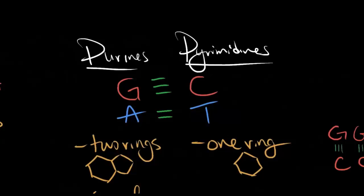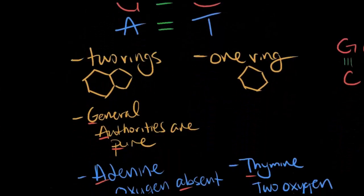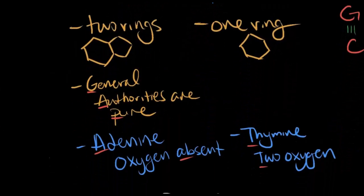Now talking more about the bases, we have two categories: purines and pyrimidines. Purines are the bases G and A. Pyrimidines are the bases C and T. Purines have two rings, while pyrimidines only have one. We want you to be able to recognize each one of the different bases — if we showed you a picture, you should be able to identify it. An easy way to remember which bases are the purines is with this sentence: 'General authorities are pure.' So if you see a base with two rings, it's either G or A.